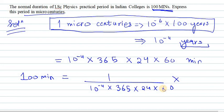This is multiplied by 100 because we need to find the value for 100 minutes. When you solve this entire equation, you get 1.9 micro centuries. So the answer for 100 minutes is 1.9 micro centuries. That's all for this question.